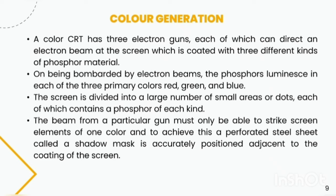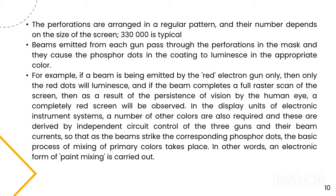The beam of a particular gun must only be able to strike screen elements of one color, and to achieve this a perforated steel sheet called a shadow mask is accurately positioned adjacent to the coating of the screen. The perforations are arranged in a regular pattern and their number depends on the size of the screen; 330,000 is typical.